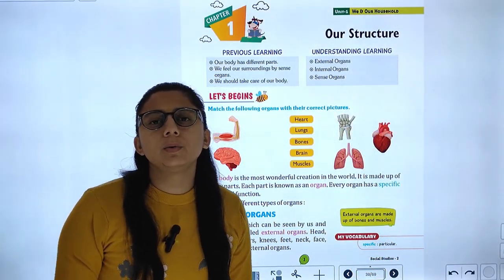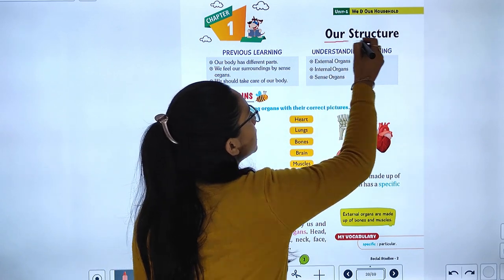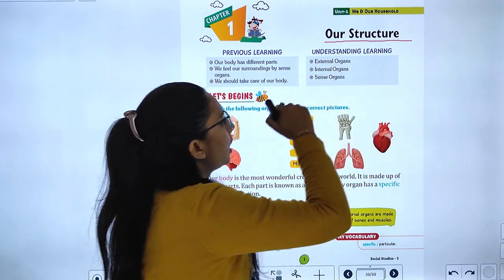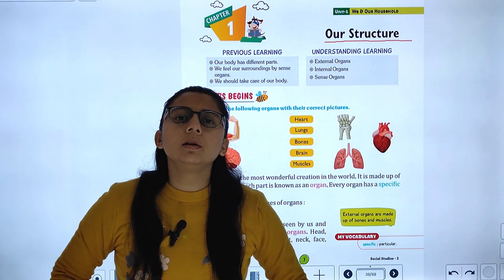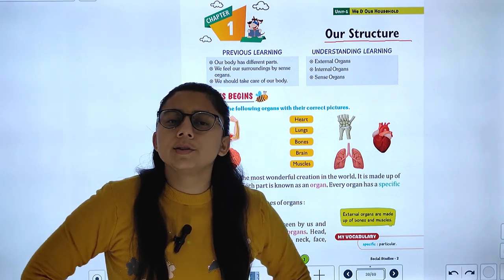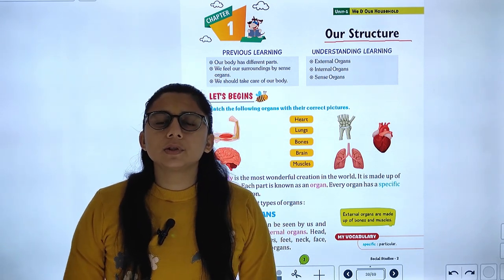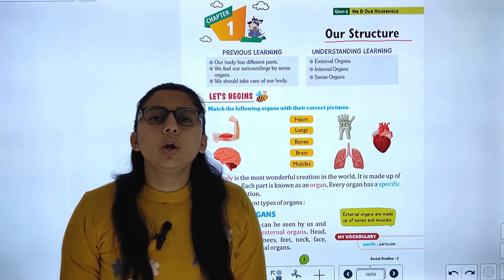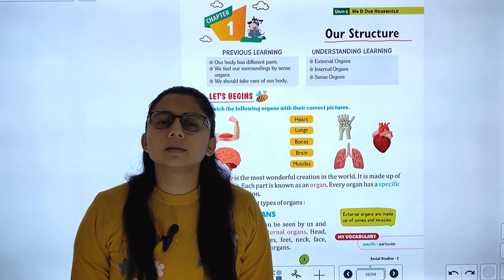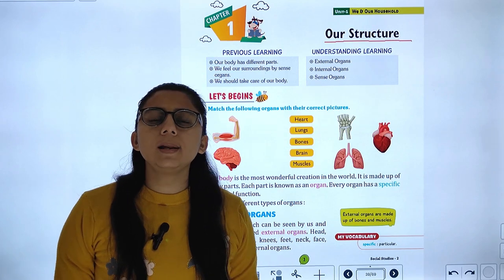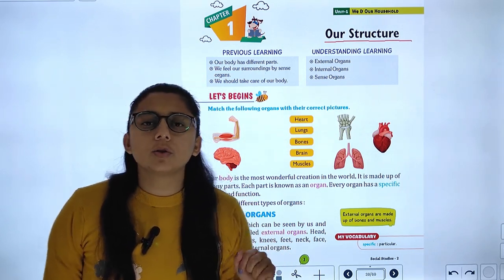Today we are going to start with chapter number one. In this chapter we will study about external organs, internal organs, and sense organs. There are five sense organs: eyes, nose, ear, tongue, and skin. The skin is the largest sense organ.